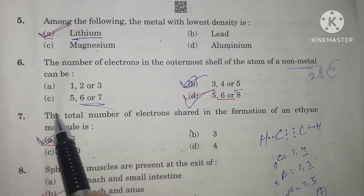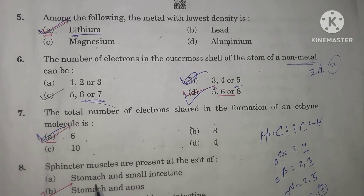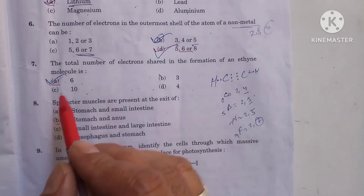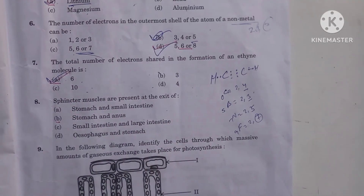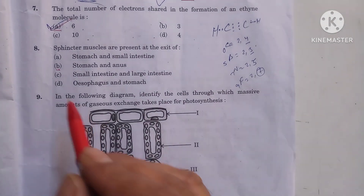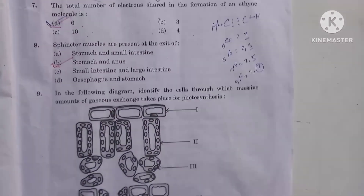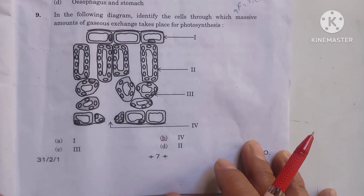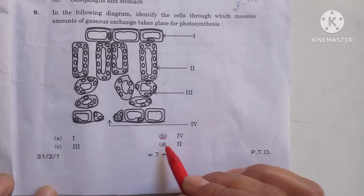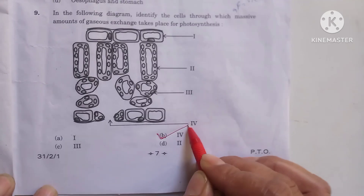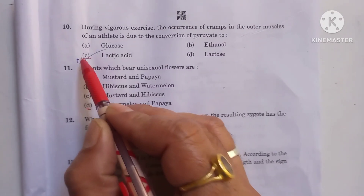In question number 6, option C is the correct option. In question number 7, option A is the correct option. In question number 8, option B is the correct option. In question number 9, option B is the correct option. Question number 10, C is the correct option.